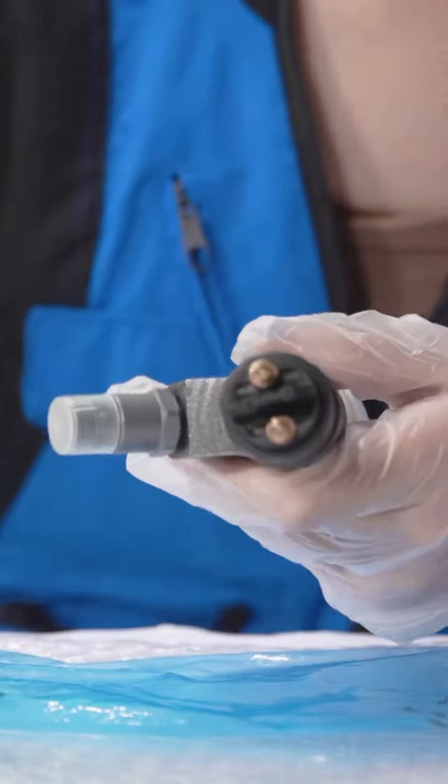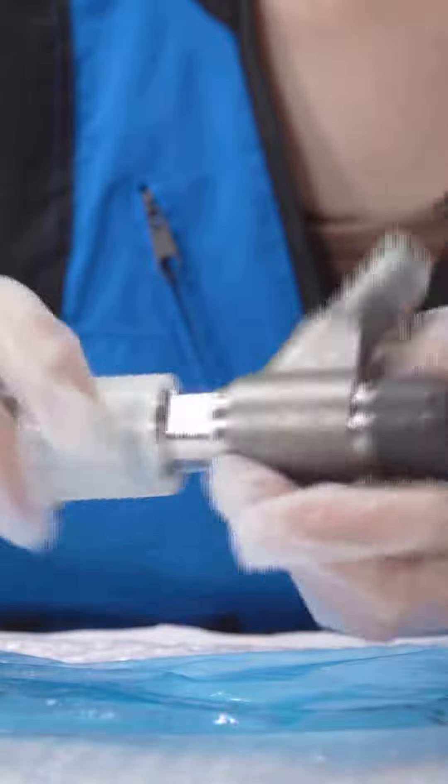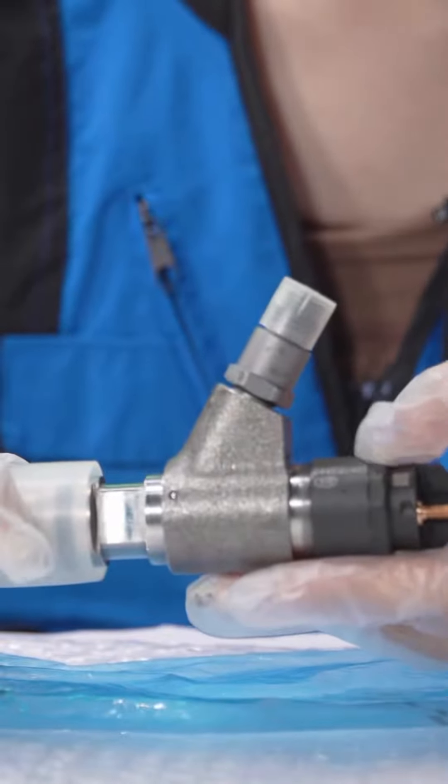And let's see the solenoid valve. There is the product code and the QR code print on this position.